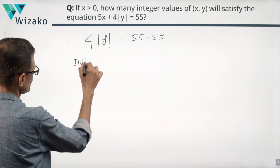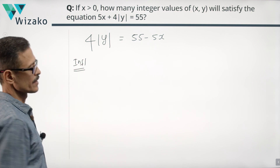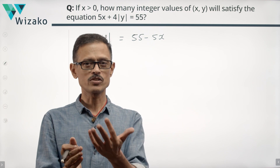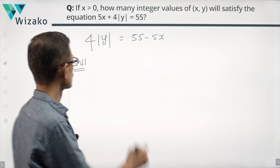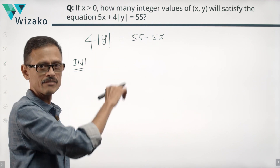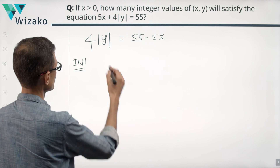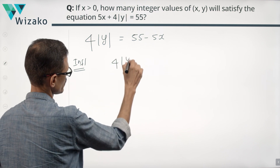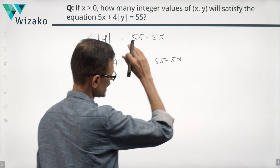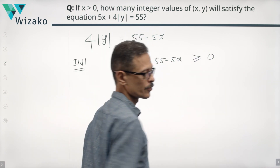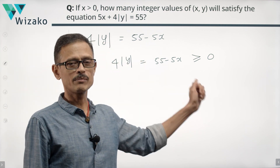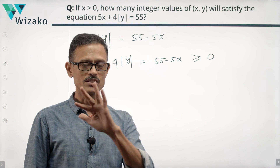Inference one — a very key inference — is that modulus of y can never be negative. The modulus of any number is either positive or zero, so modulus of y is non-negative. Four times modulus of y is non-negative, which means 55 minus 5x is non-negative. So 4 modulus of y, which equals 55 minus 5x, cannot be negative — it could be zero or a positive number. So 4 modulus of y equals 55 minus 5x is a non-negative number.